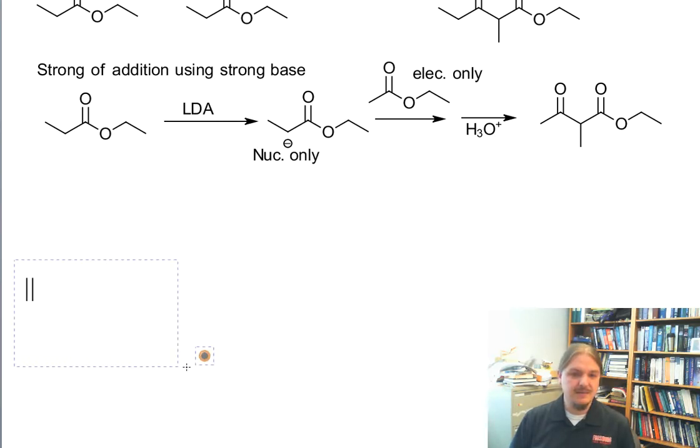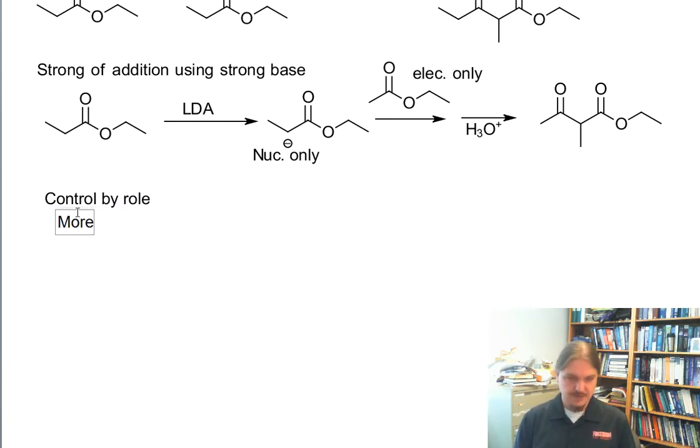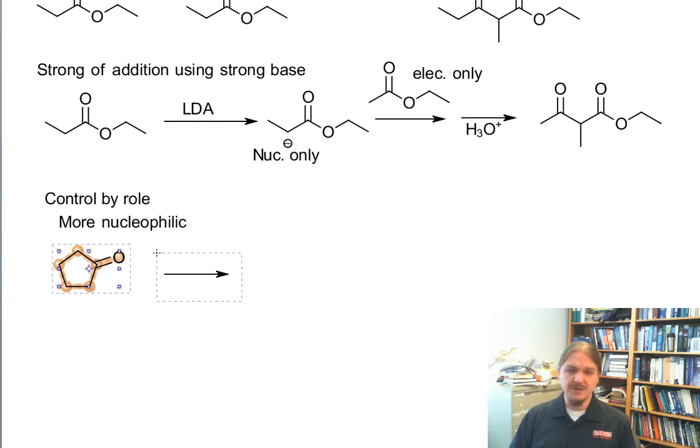Another way that this can be done, which also mirrors the way that we do things in the aldol world, is to pick something that is more nucleophilic than our ester. So for example, you can do reactions where you have a ketone as a nucleophile and an ester as an electrophile. And it turns out that the ketone is a better nucleophile because the ketone is a little bit more acidic than the ester. The extra alkoxy group on the ester makes it less acidic.